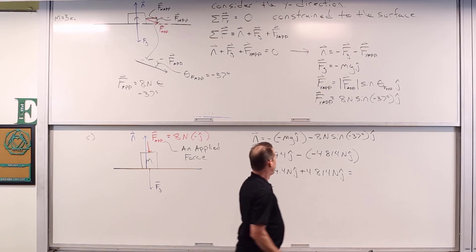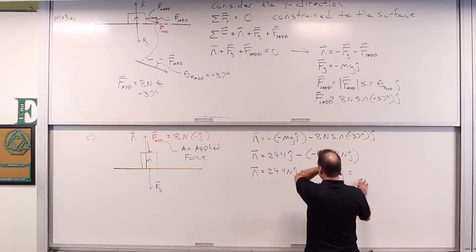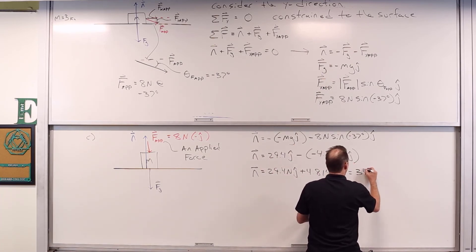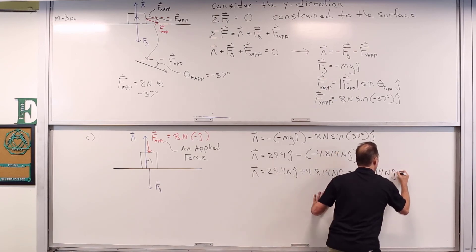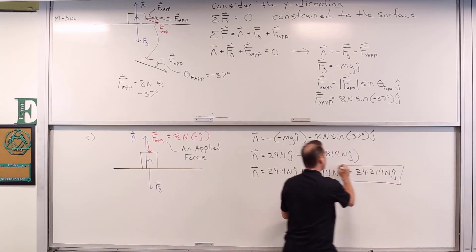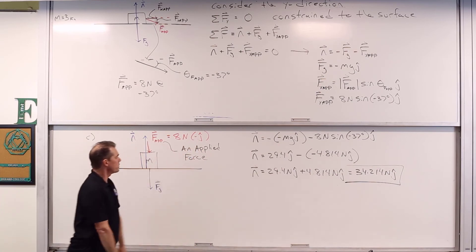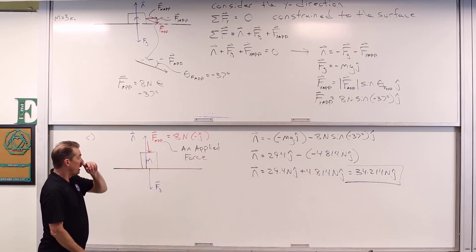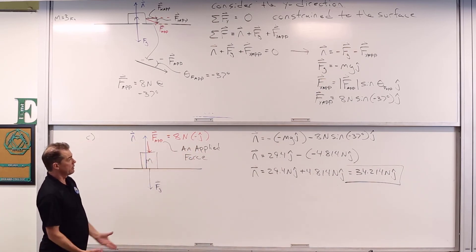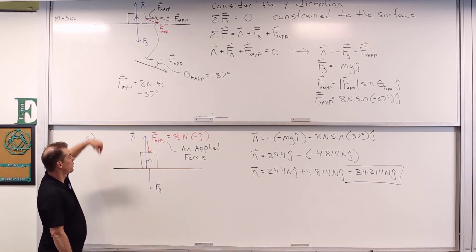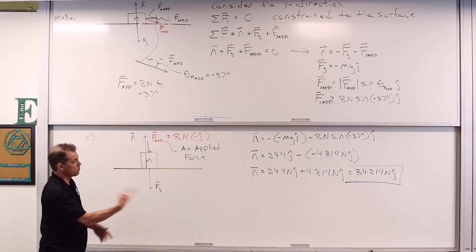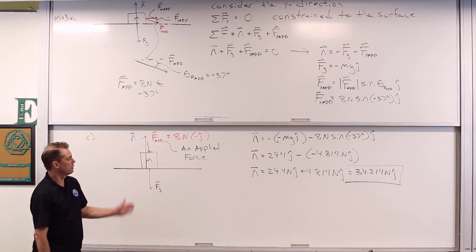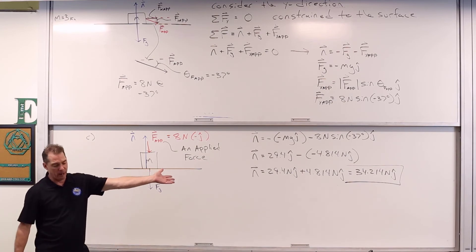So the normal force is approximately 34.2 Newtons J hat. We still applied 8 Newtons, but not all of it was downward, so the normal force didn't increase as much as when we pushed straight down — because not all of the applied force was in the negative J hat direction.